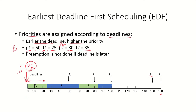With P1's period at 50 and P2's period at 80, the deadline of P1 is earlier, so P1 is given a higher priority. Currently both P1 and P2 are in the system, but P1 is given higher priority because its deadline is 50 whereas P2's is 80. So P1 will be scheduled first and it requires the CPU for 25 time units, releasing it at time 25, at which point P2 will be given the CPU.